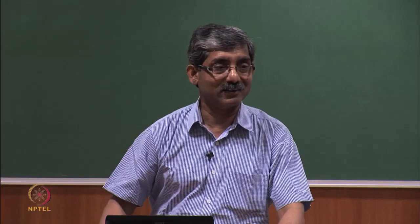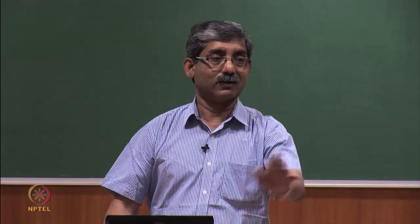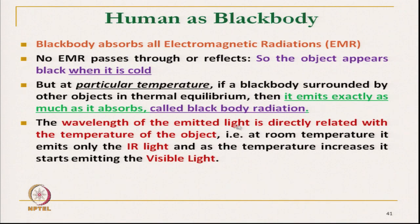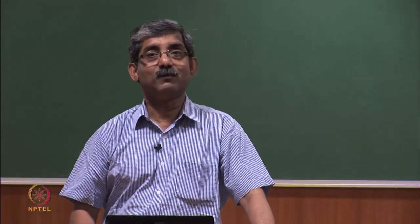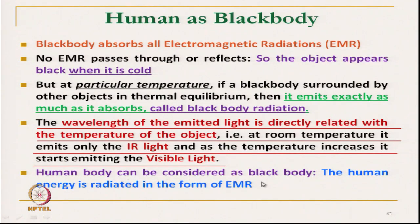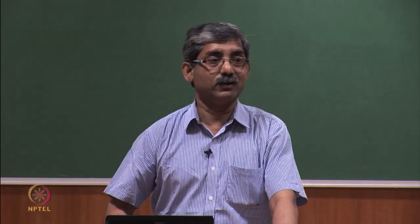It will start radiating heat if surrounded by different objects. The wavelength of emitted light is directly proportional to the temperature of the object — at room temperature it emits only infrared light, which is not visible. As temperature increases it starts emitting visible light. The human body can be considered as a black body, and human energy is radiated in the form of electromagnetic radiation. Whatever heat we generate, we release it in the form of electromagnetic radiation.